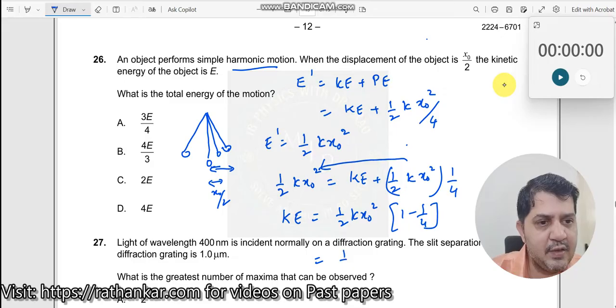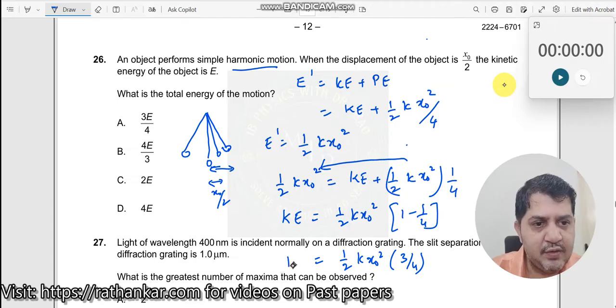So this equals half k x₀² times 3/4. Now what is this? This is your kinetic energy, and what does the problem say? Kinetic energy is E. The value equals E.